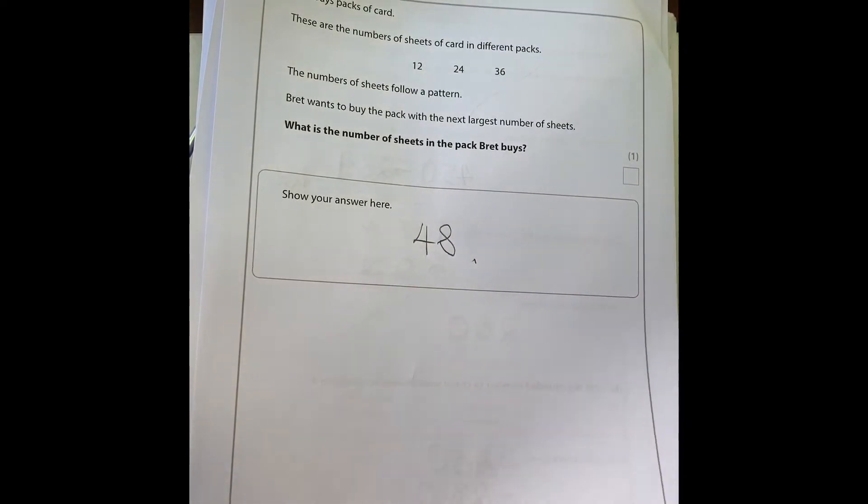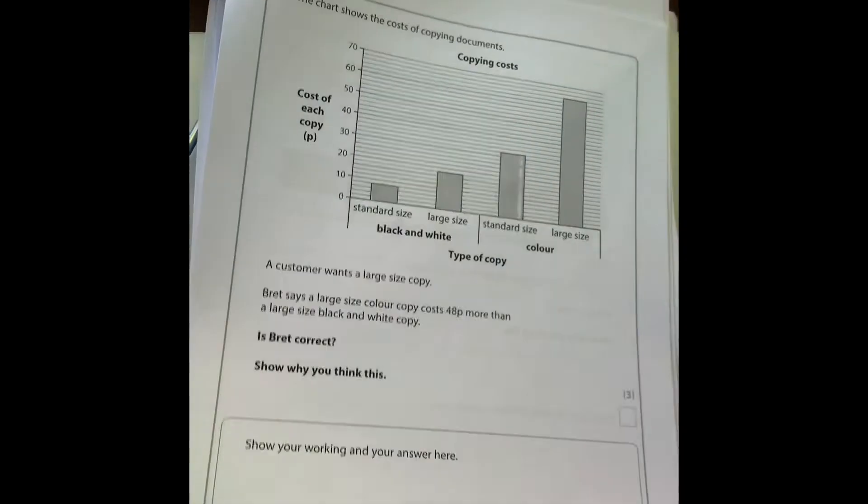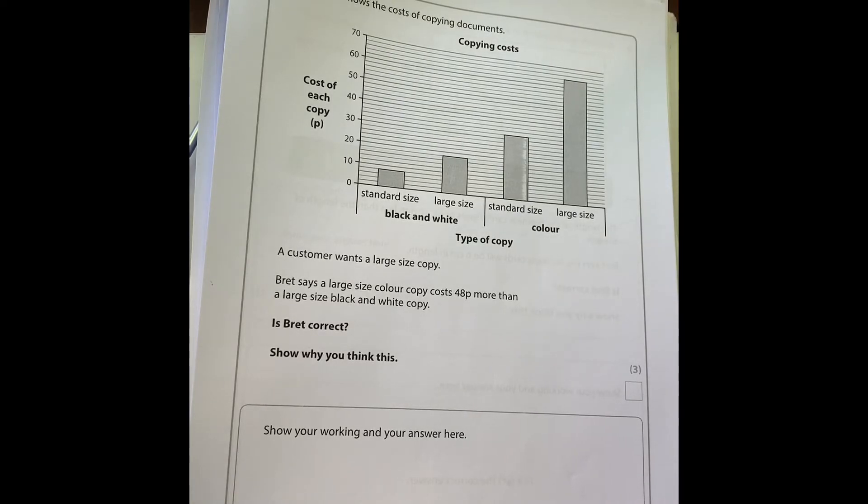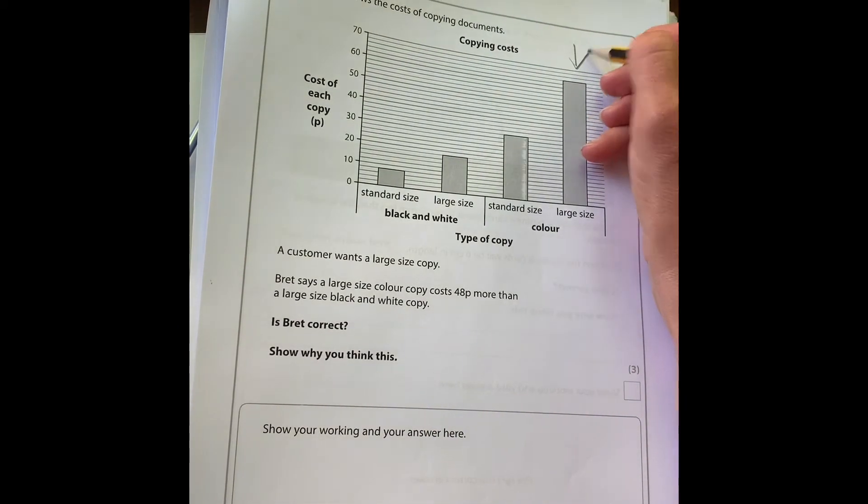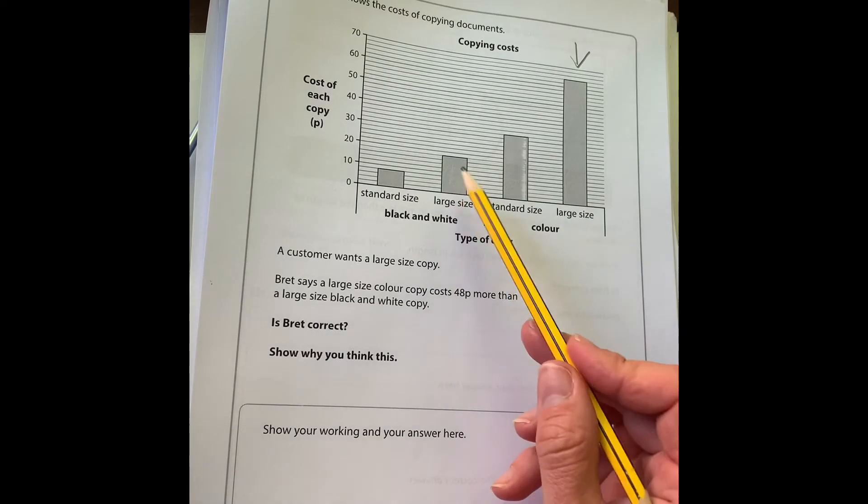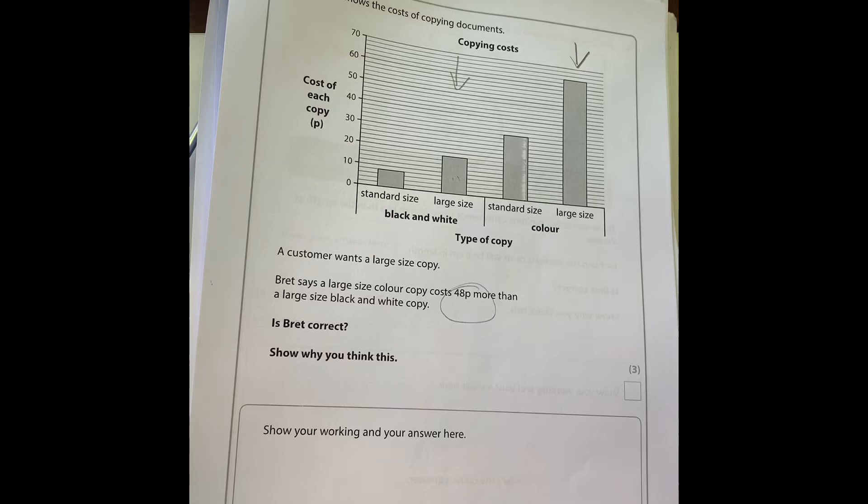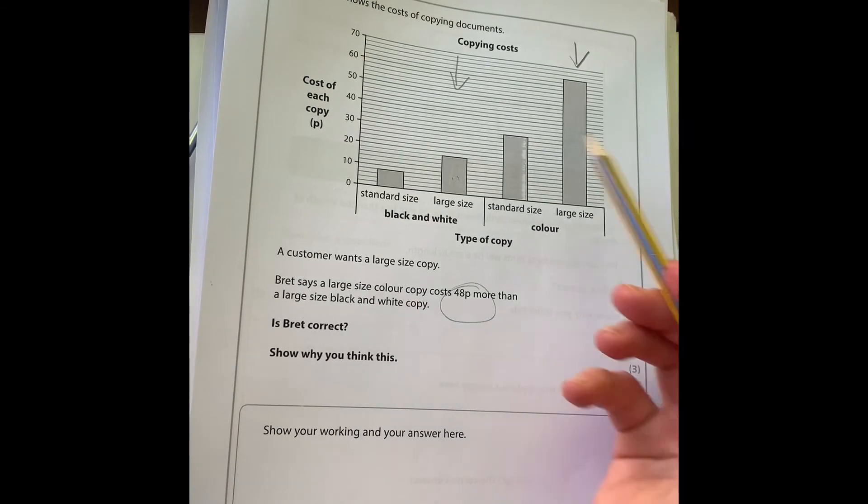Number seven: We've got a chart here. A customer wants a large size copy. Brett says a large size color copy costs 48p more than a large size black and white copy. Is he correct? The large size color copy is this one here and the large size black and white copy is this one here.